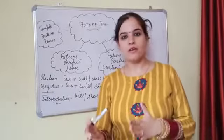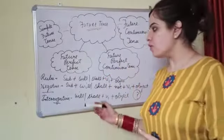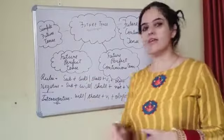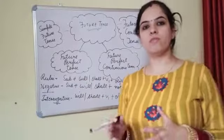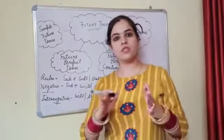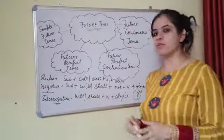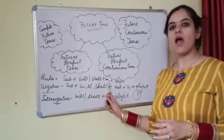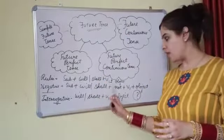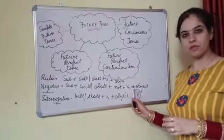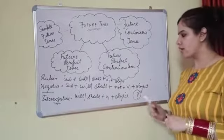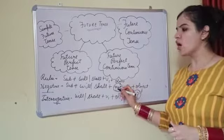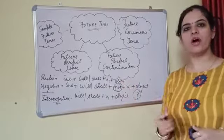After that, we discussed how to convert simple future tense into negative. When we convert simple future tense into negative, the rule is: subject plus will or shall plus not plus verb first form plus object. You have to use only 'not' after will or shall.